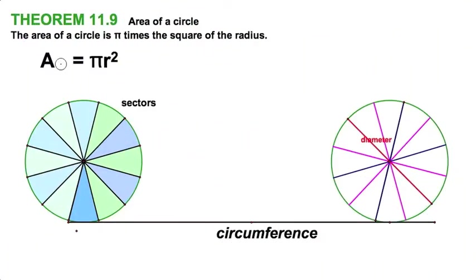Well, here we go with the area of a circle, Theorem 11.9, our old πr² that we remember from back in the day. We're going to make a demonstration to help us understand that.